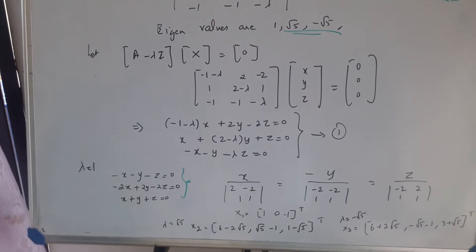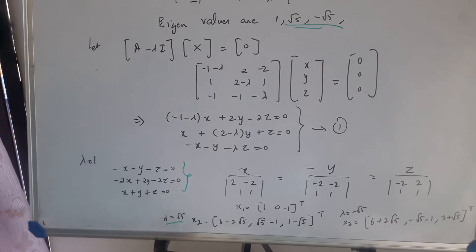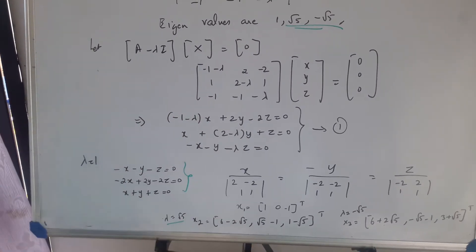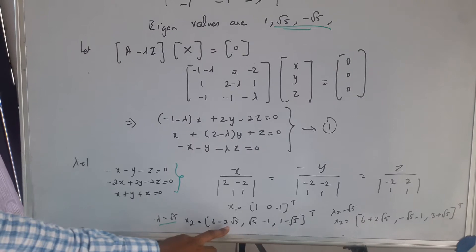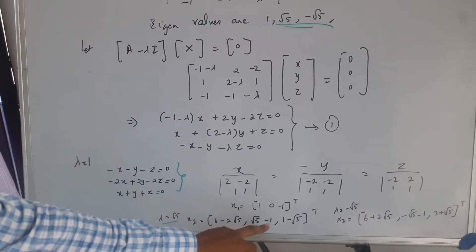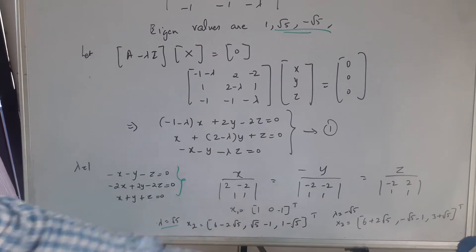Likewise, for lambda which is root 5, I get this result: 6 minus 2 root 5, root 5, 1 minus root 5 transpose.